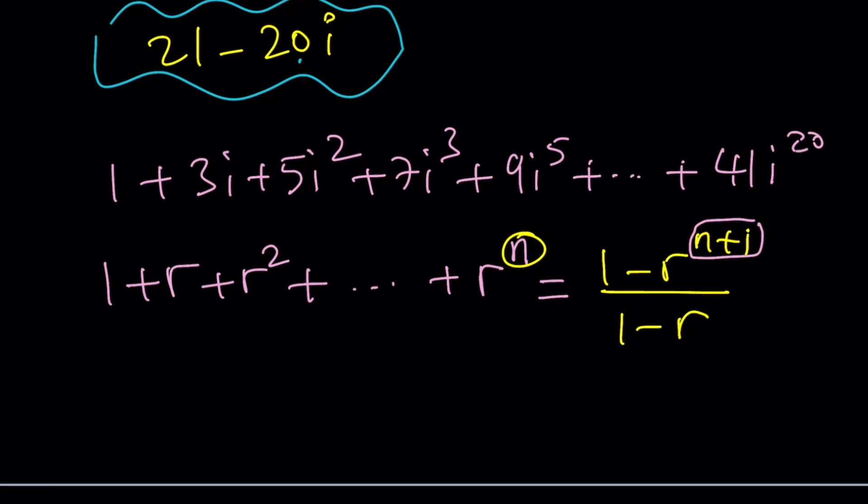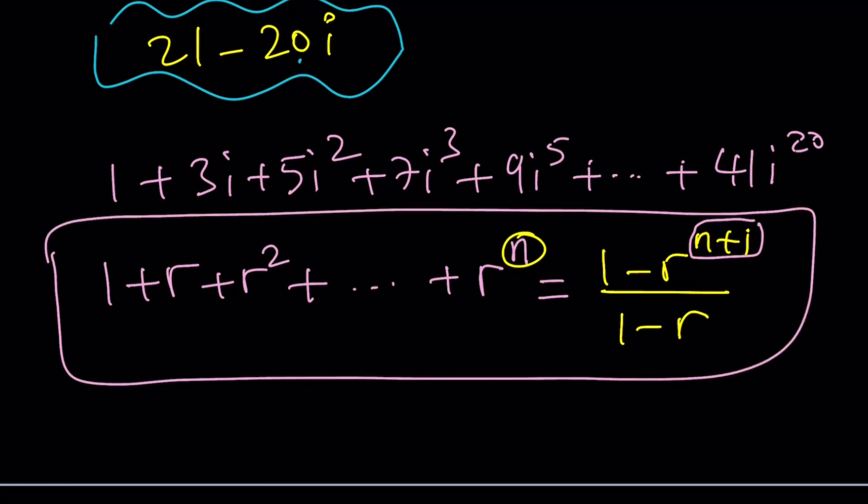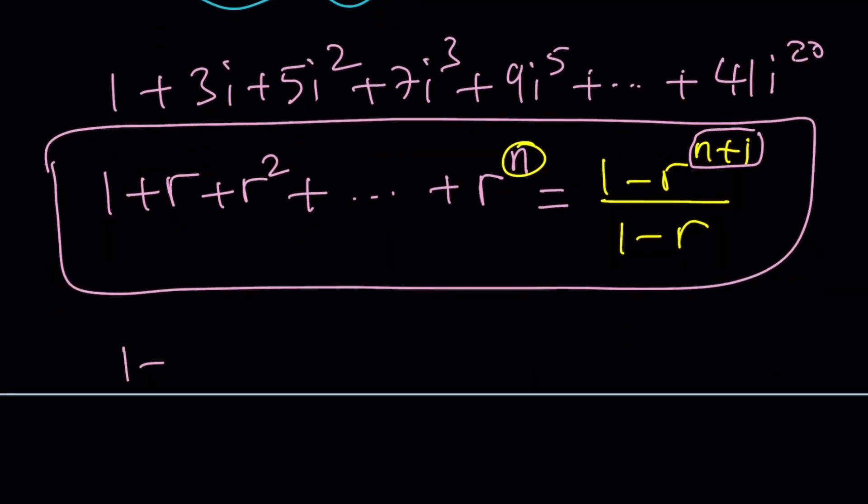I've got a sum like this, which is geometric, nice. I want to get to this, so I want to get to something like this: 1 plus 3r plus 5r squared plus 7r cubed plus dot dot dot, all the way up to whatever that is. How do I do that?